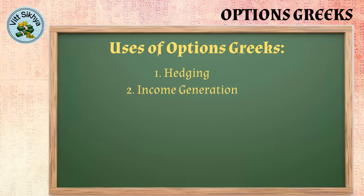Option Greeks can also be used to generate income. For example, you could sell covered calls on stocks that you own. This involves selling call options with a strike price above the current market price. If the stock price does not rise above the strike price by the expiration date, you keep the premium from the call option.